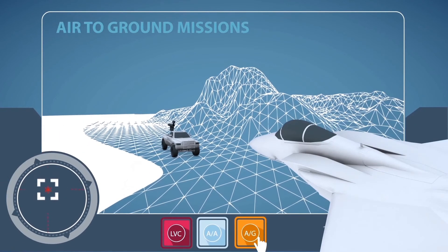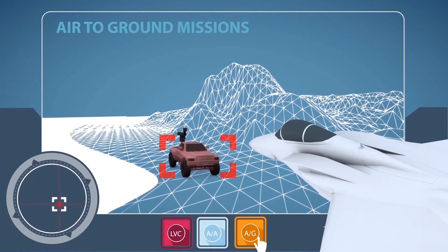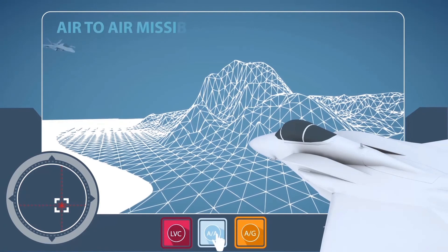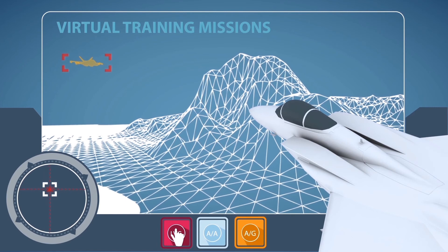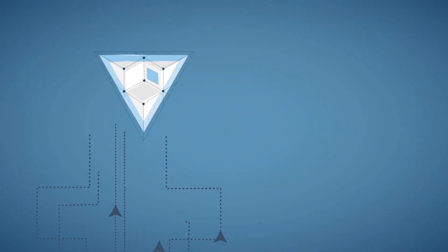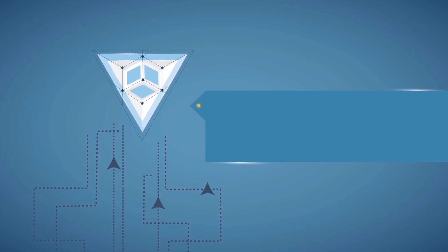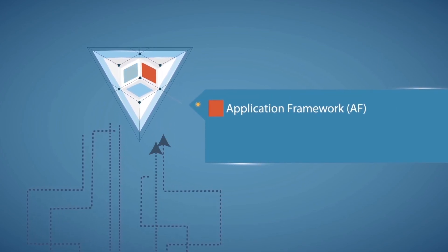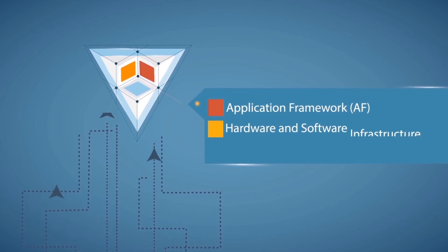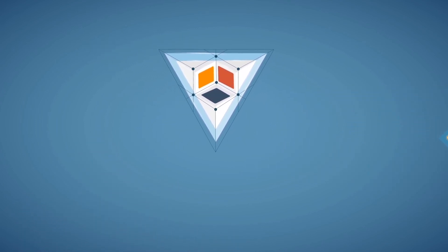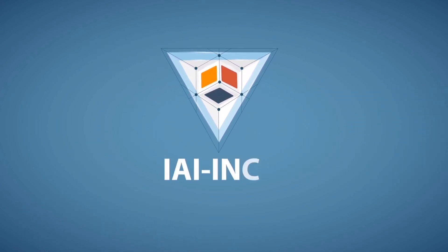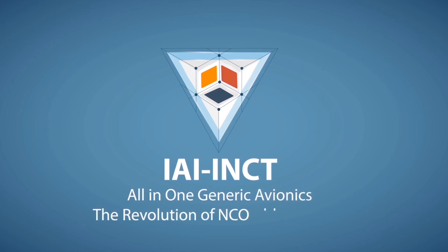Air-to-air-to-ground missions, air-to-air-to-air missions, virtual training missions. INCT's core system is based on three central elements: the application framework, hardware and software infrastructure, and operational applications, which together comprise a complete system solution. INCT — all-in-one generic avionics: the revolution of NCO applications.